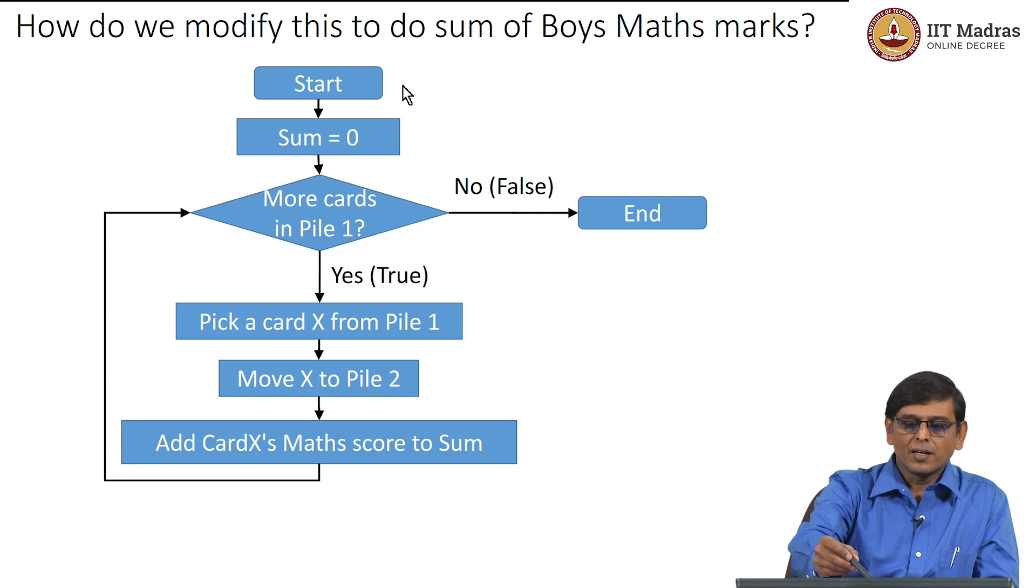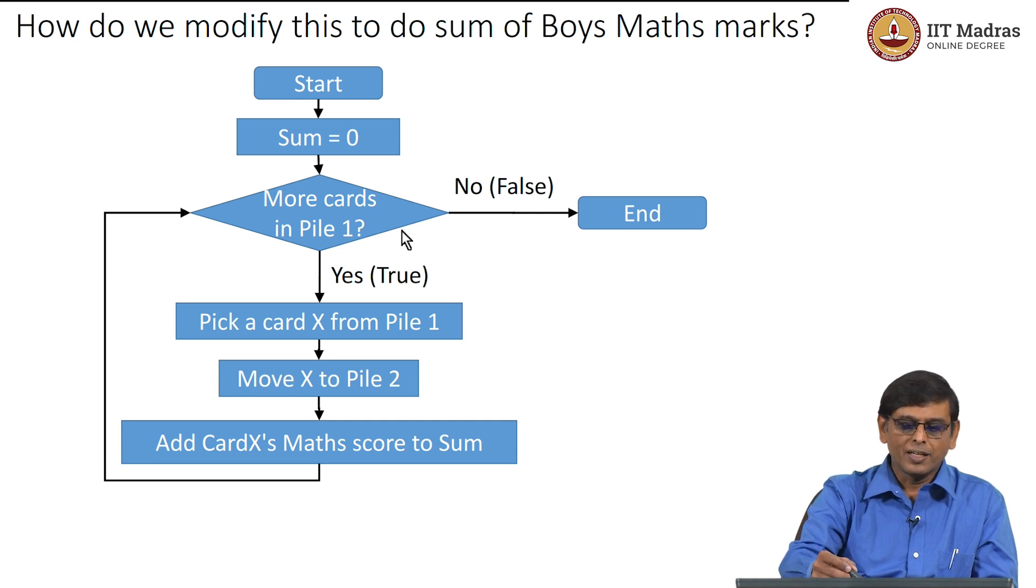Clearly it is not at the initialization; somewhere inside the iterator we have to do it. In the initialization step where we are setting sum to 0, there is nothing to be done. We are going to check whether there are more cards in pile 1 - we are going to do that whether it is boys or girls. And inside this we have to pick a card from pile 1 and move the card to pile 2 - that also we have to do anyway.